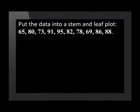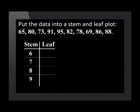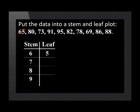Put the data into a stem and leaf plot: 65, 80, 73, 91, 95, 82, 78, 69, 86, 88. First we draw the stem and fill in the values. Remember that 6, 7, 8 and 9 represent 60, 70, 80 and 90. The first number is 65, so we put a 5 in the 60 row. We also cross out 65 so that we remember we've plotted it.